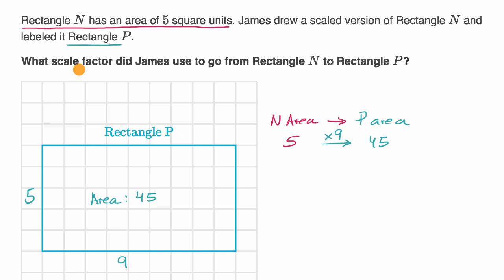Now what would be the scale factor if our area grew by a factor of nine? Well we just talked about the idea that area will grow. The factor with which area grows is the square of the scale factor. So one way to think about it is scale factor squared is going to be equal to nine. Or another way to think about it, scale factor is going to be equal to three to go from N to P.